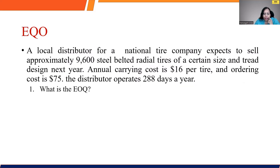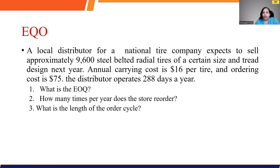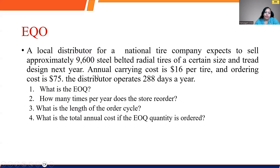Let's check what they have asked us to calculate. At the first level, they are asking us to find out the economic order quantity for the given demand of 9,600. At the next level, they have asked how many times does the store need to reorder — the number of orders that must be placed. At the third level, what is the length of the order cycle — within how many days should the next order be received? And finally, when ordering the EOQ, what will be the total cost? These are the four questions.